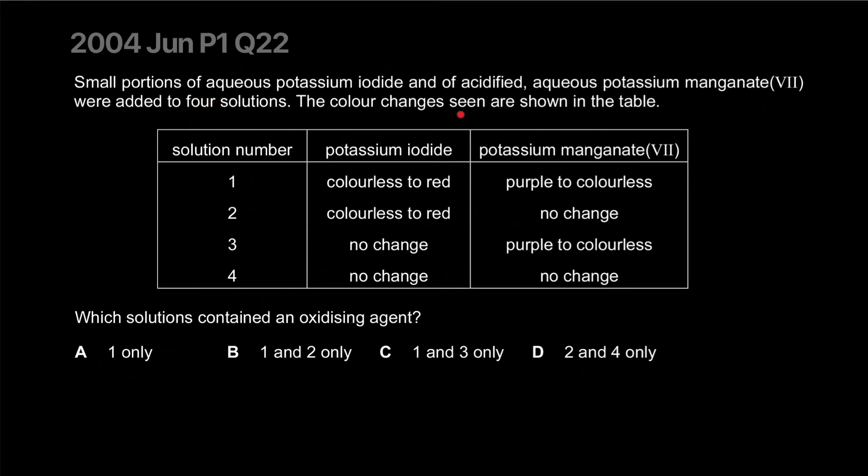Small portions of aqueous potassium iodide and acidified aqueous potassium manganate were added to four solutions. Which solutions contained an oxidizing agent? Potassium manganate itself is an oxidizing agent, so it won't react with other oxidizing agents. It will however react with reducing agents. For potassium iodide, we've got to focus on iodine. Iodide ion is colorless and if it reacts, it'll form iodine.